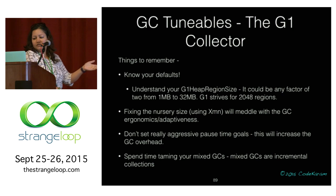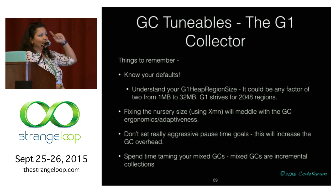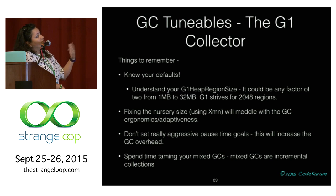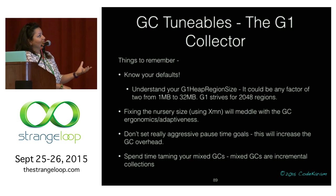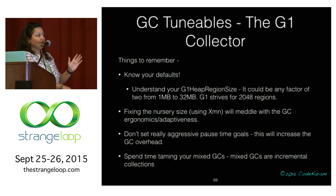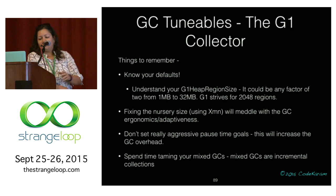Know that if you know your G1 heap region size, you can determine whether an object will be humongous. When you fix something, you're meddling with GC ergonomics and adaptiveness — restricting it. When you select aggressive pause-time goals, remember these are soft real-time, not hard real-time goals. Setting them too aggressively means you're increasing GC overhead and sacrificing throughput. Spend time taming your mixed GCs.